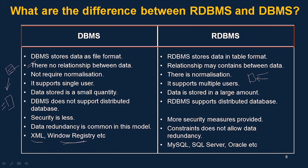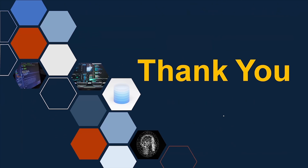Examples of DBMS include XML files, Windows Registry, and some old file management systems. On the other hand, MySQL, SQL Server, and Oracle are examples of RDBMS systems. These are the key differences between RDBMS and DBMS.